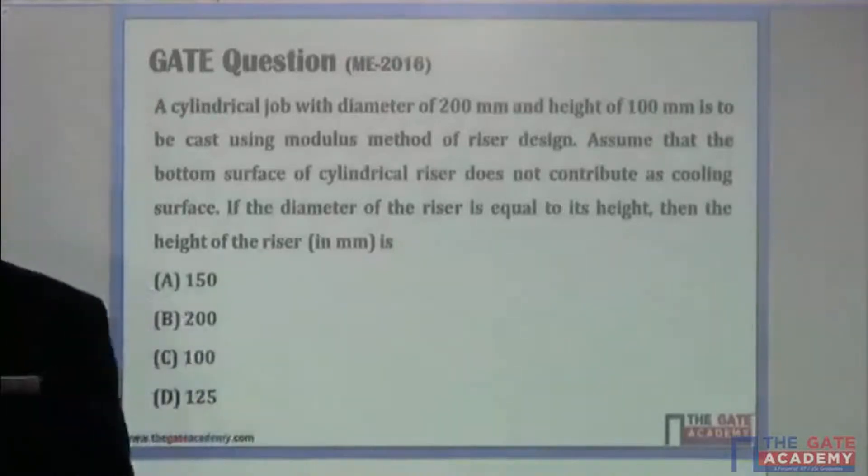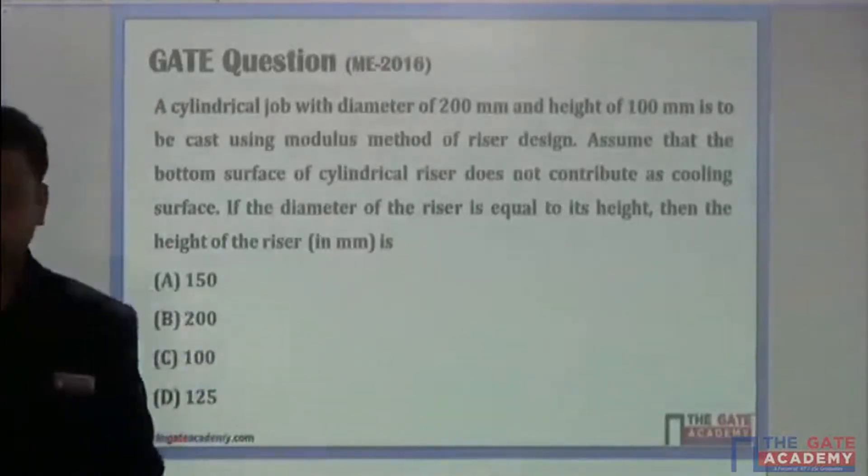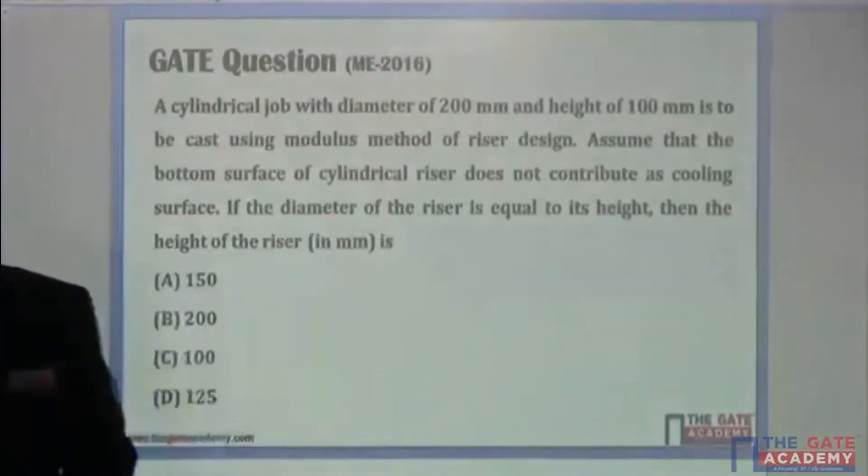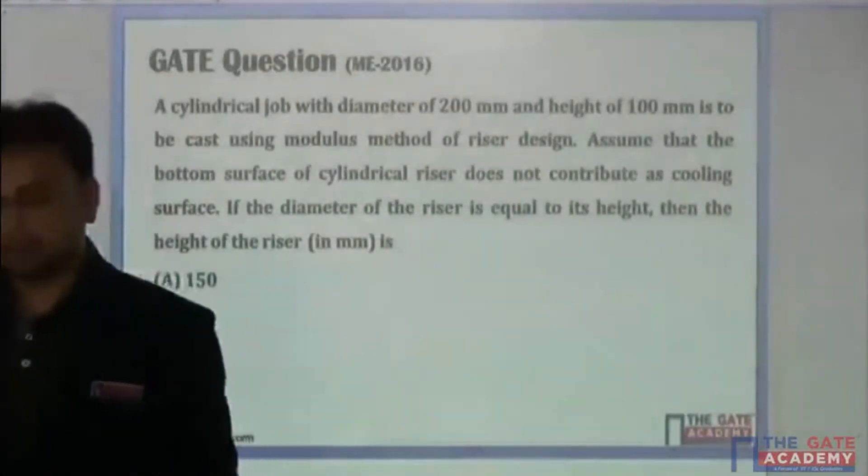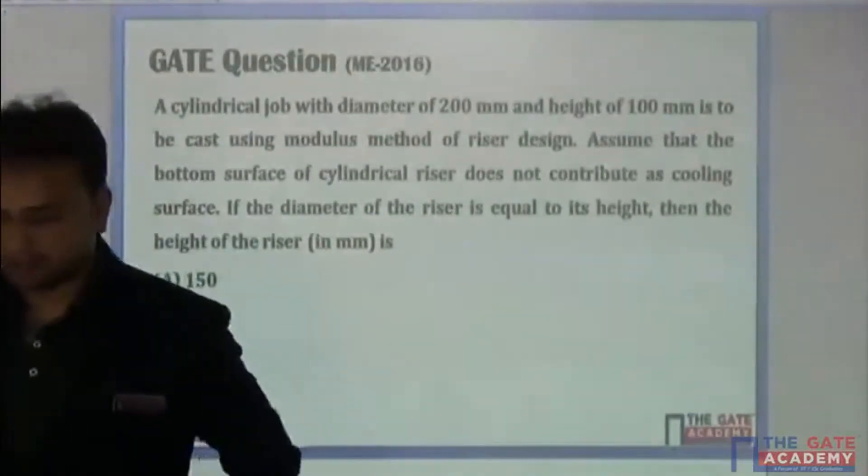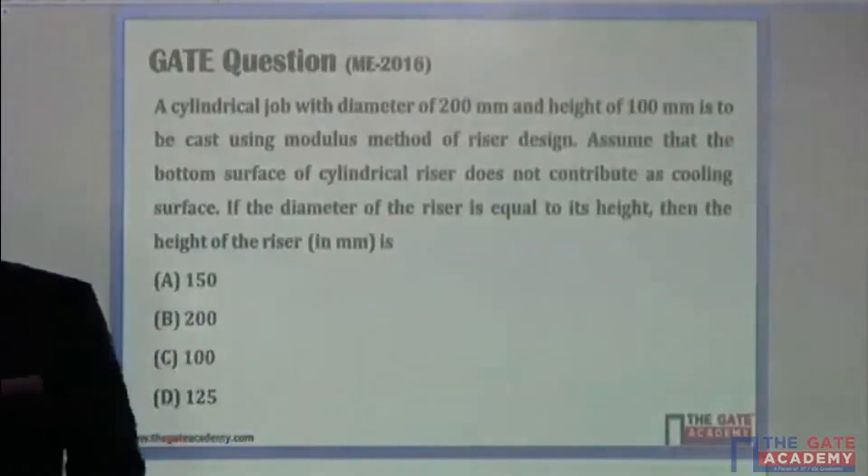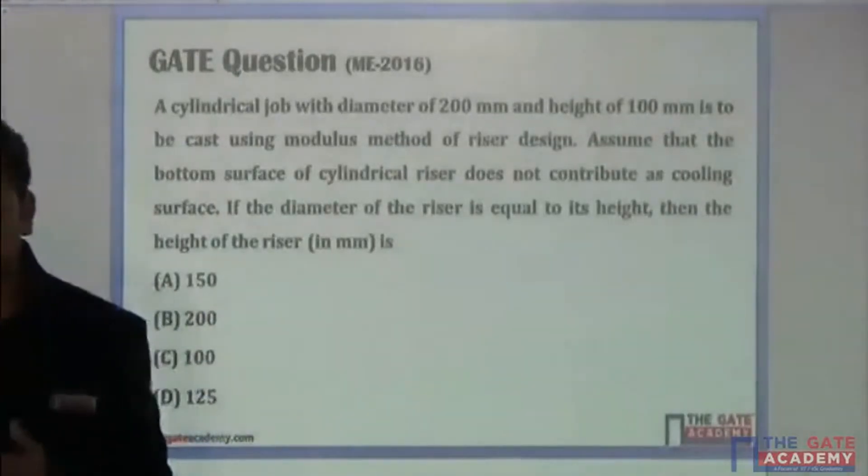This problem is from metal casting. A cylindrical job with diameter 200mm and height 100mm is to be cast using modulus method of riser design. Assume that the bottom surface of the cylindrical riser does not contribute as cooling surface.